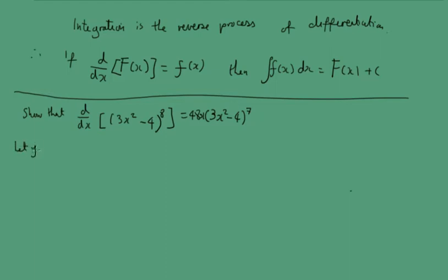Let y equal (3x² - 4)⁸. I'm going to use the chain rule to find dy by dx.